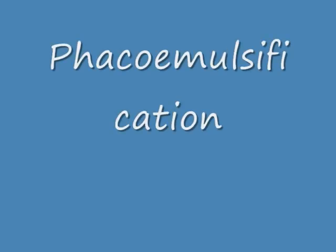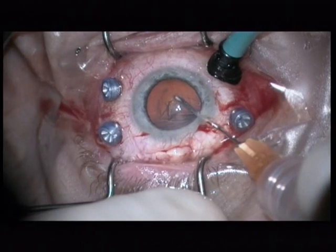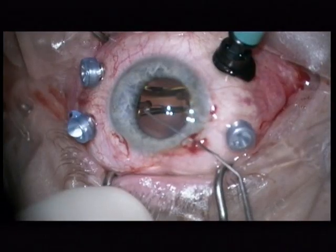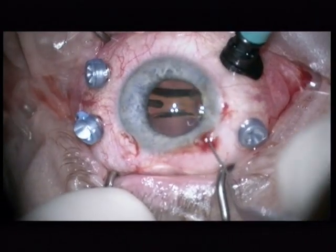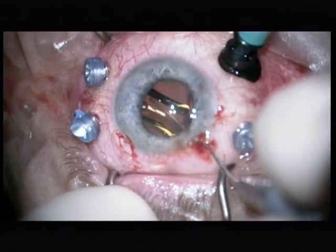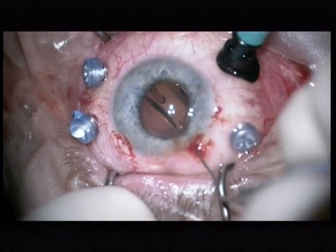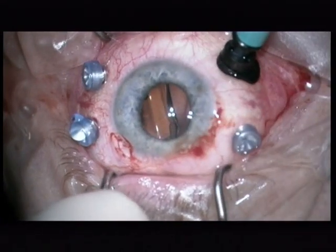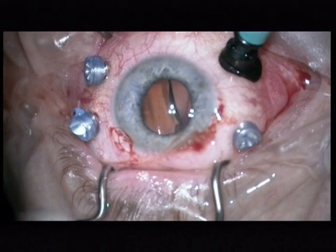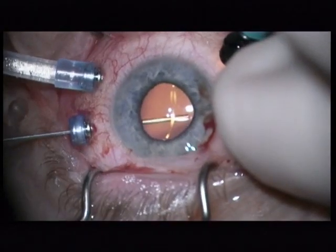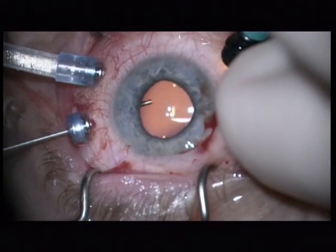I start with phacoemulsification, nothing special. This is a Hoyer Vivinex IOL, endocapsular location.